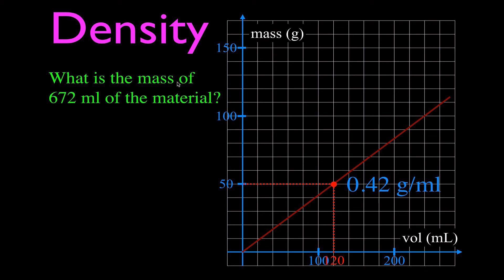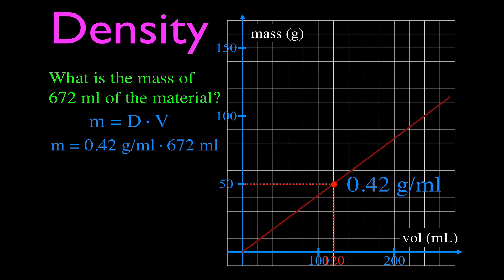But what if the value is outside the graph? For example, what is the mass of 672 milliliters of this material? Well, 672 is not on the graph, so I can't read it off — I have to extrapolate outside the graph. I'll use the density equation rearranged for mass: mass equals density times volume. I already calculated the density as 0.42 grams per milliliter. So mass equals 0.42 grams per milliliter times 672 milliliters, and the mass of 672 milliliters of this material would be 282 grams.